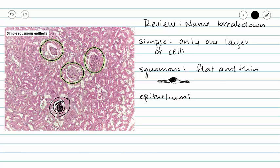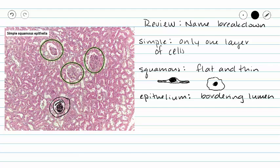If you look at a fried egg from the top, you see it has an irregular border and a nucleus in the middle. That nucleus tends to be round from the top, but our nuclei are going to be a little bit more drawn out, as I'll show you in just a second. Our last word is 'epithelium' — epithelia is the plural — and remember, our epithelium is going to be bordering a lumen, so we will have that white space.